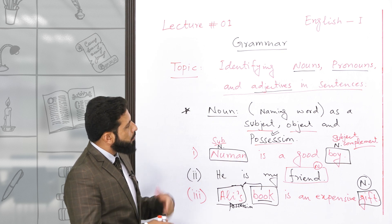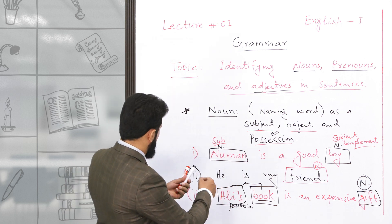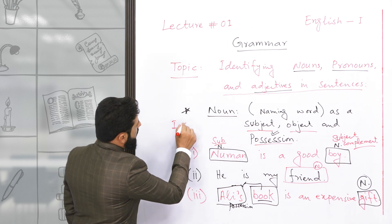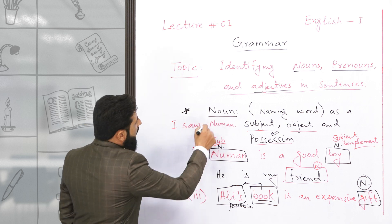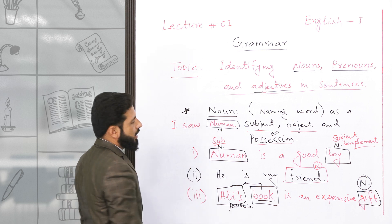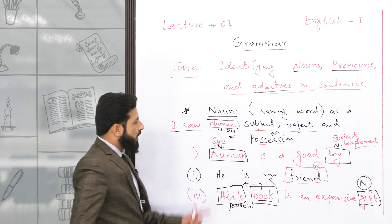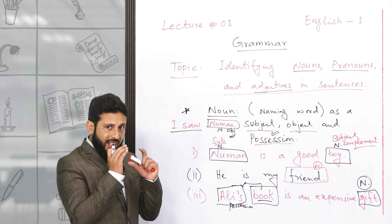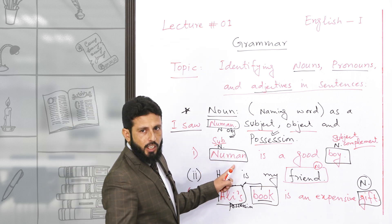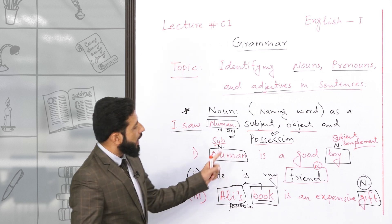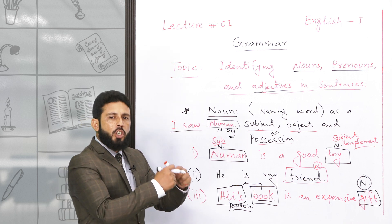اگر آپ noun کو as an object دیکھنا چاہتے ہیں تو مثال کے طور پر: 'I saw No man'۔ میں نے No man کو دیکھا۔ یہاں پر 'No man' noun ہے لیکن یہ subject نہیں ہے، یہ object ہے۔ Sentence کے اندر noun کی بڑی identification marks یہ ہیں: یا تو subject کے طور پر آئے گا، یا object کے طور پر، یا complement کے طور پر، یا possessive position بتائے گا۔